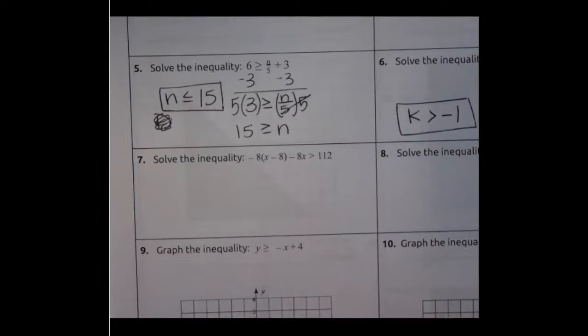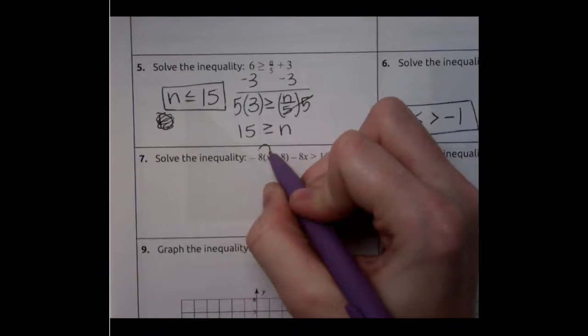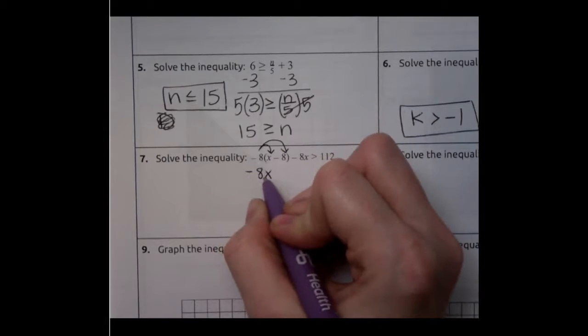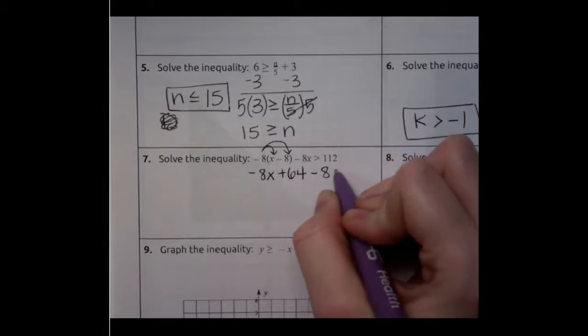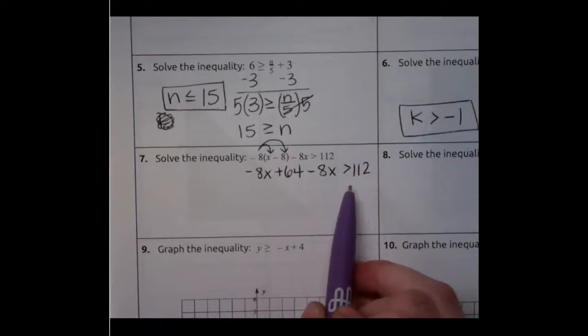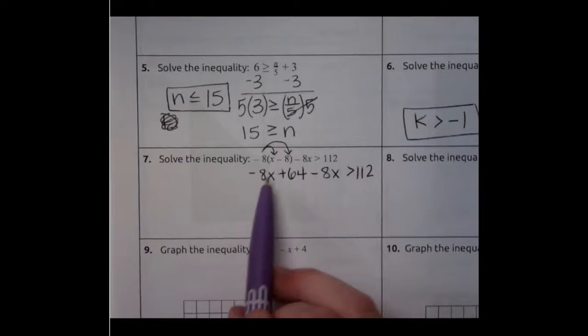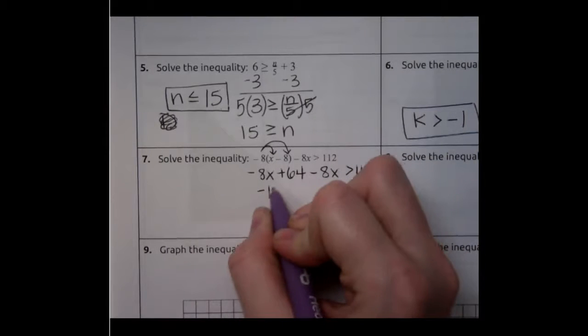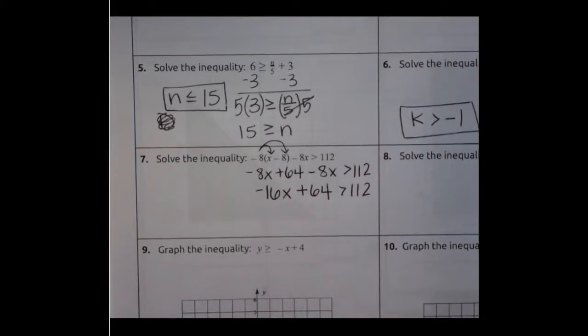On number 7 we've got more going on here. We have multiple x's but it's okay because they're the same variable. So we're just going to start simplifying. Just like number 6 we have a number on the outside of the parentheses. So I'm going to distribute that number. Negative 8x. Negative 8 times x is negative 8x. Negative 8 times negative 8 is 64, a positive 64. I'm going to bring the rest of my numbers down. I just copied these down. Now I'm going to simplify what we have. So I've got two things, two terms that have an x. Negative 8x minus 8x is going to give us negative 16x plus 64 is greater than 112.